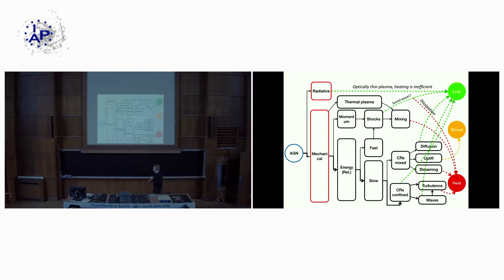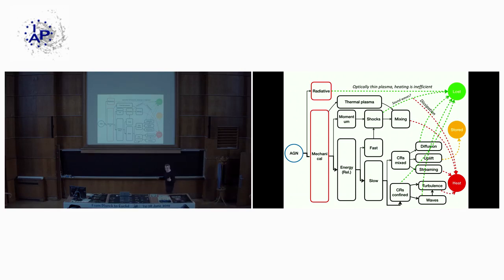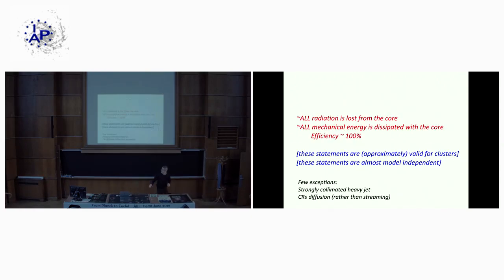Almost no matter which route you choose, the coupling efficiency is close to 100%. Whatever you do, you end up with roughly 100% efficiency — maybe 70%, but of order unity. The key statement: all radiation is lost from the core, and all mechanical energy, regardless of physical details, is dissipated within the core with approximately 100% efficiency. These statements are approximately valid for clusters and are nearly model-independent.